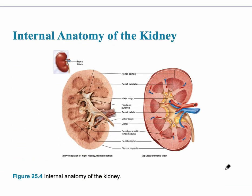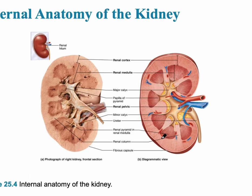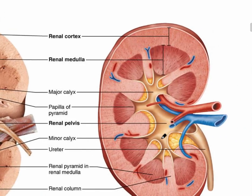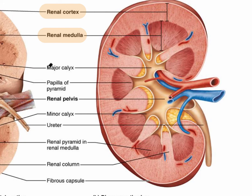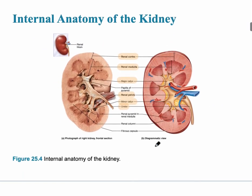This slide shows the internal anatomy of the kidney, with a specimen on the left and a diagram on the right. The outer region is the cortex, where part of the nephron called the glomerulus is found. Deep to that is the renal medulla, where the majority of the nephron is. The nephron is the functional unit of the kidney that forms urine. The renal medulla leads to the minor calyx, then the major calyx, which is an extension of the renal pelvis, leading to the ureter to drain freshly formed urine out of the kidney.